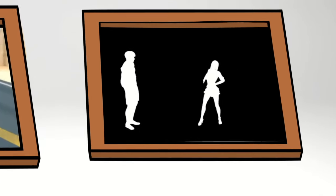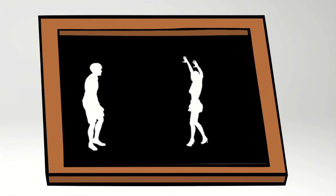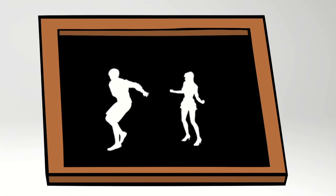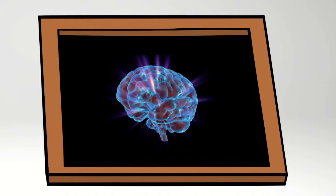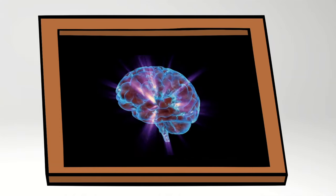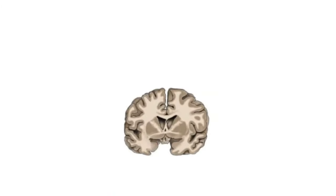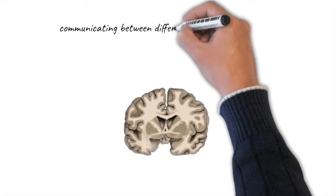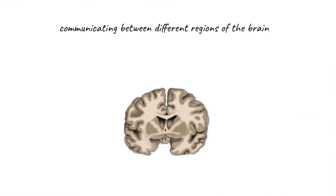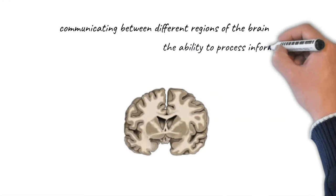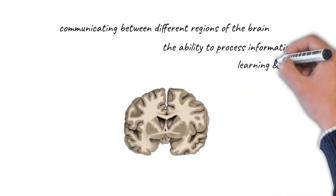I will start with something that personally was surprising to me, and that is about what dancing can do to the brain. In the deeper tissues of our brain, there is the white matter. It contains nerve fibers, which are responsible for communicating between different regions of the brain. This affects brain functions like the ability to process information, learning, and memory.